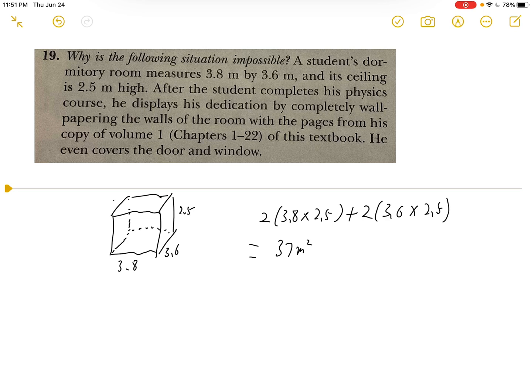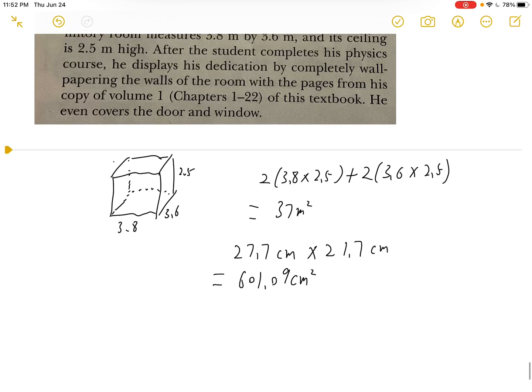We need to find the area of a page of this book. The area of a page is 27.7 centimeters times 21.7 centimeters, and this will give us 601.09 centimeters squared.